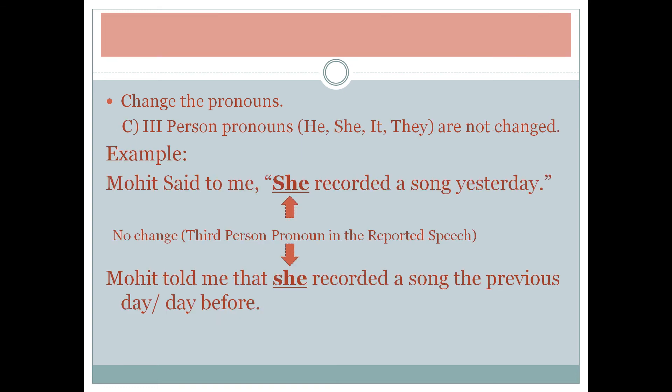Third, third person pronouns like 'he,' 'she,' 'it,' and 'they' are not changed at all. For example, 'Mohit said to me, she recorded a song yesterday' — 'she' will not change. It becomes: 'Mohit told me that she recorded a song the previous day.'